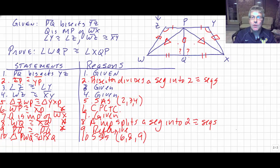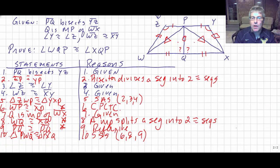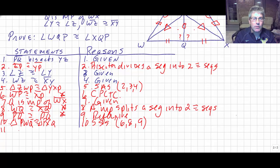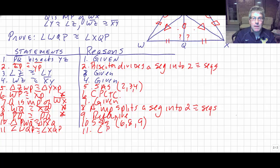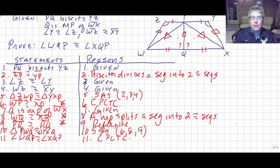And now I know that angle WQP is congruent to angle XQP by corresponding parts of congruent triangles are congruent — CPCTC. So we went through one pair of triangles and used CPCTC to help us get the second pair of triangles congruent. We detoured through the first pair to get the second pair congruent, and then used CPCTC. We'll work on that more in class.